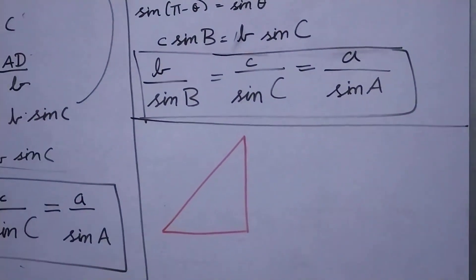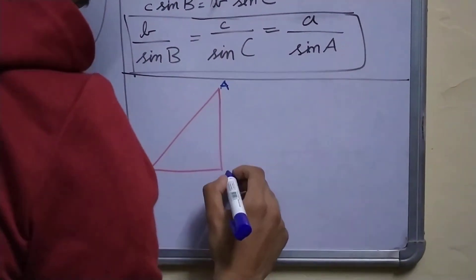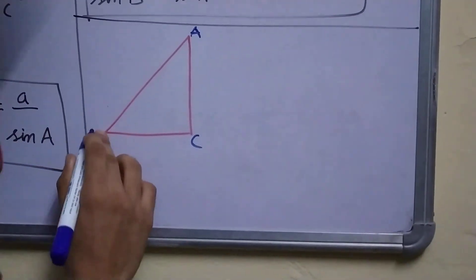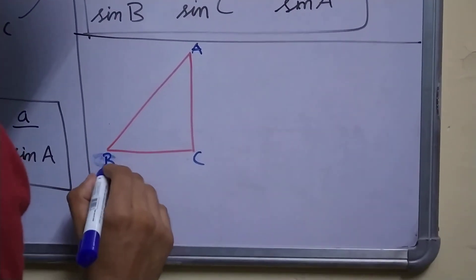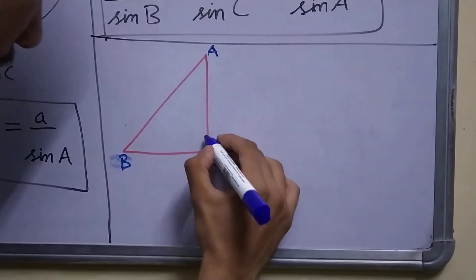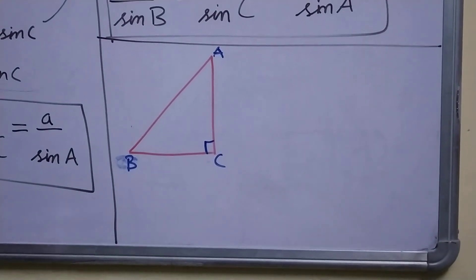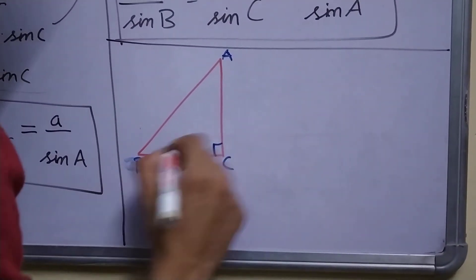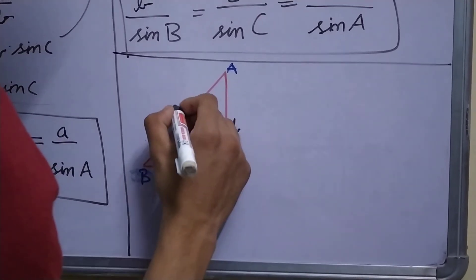So let me start by drawing a right angle triangle. Same nomenclature: A, C, B. Now, in this case, this angle is 90 degrees. The sides are a, b, c.